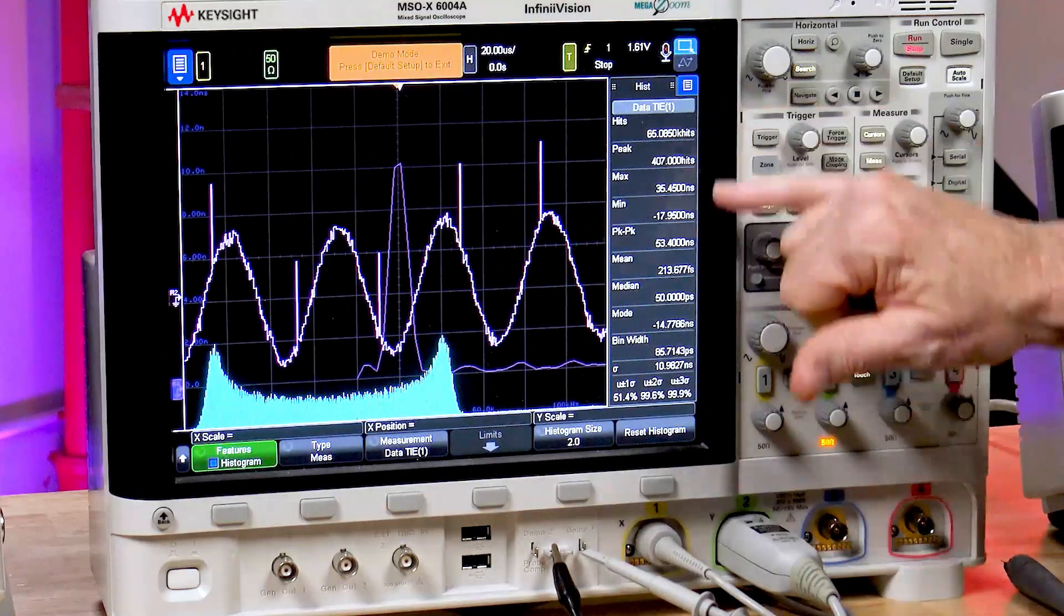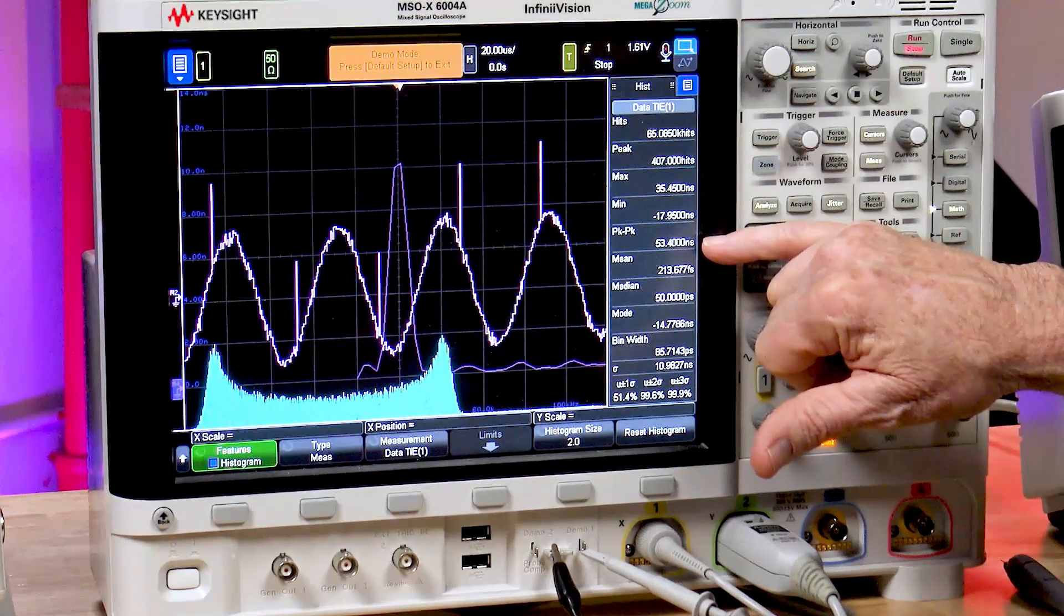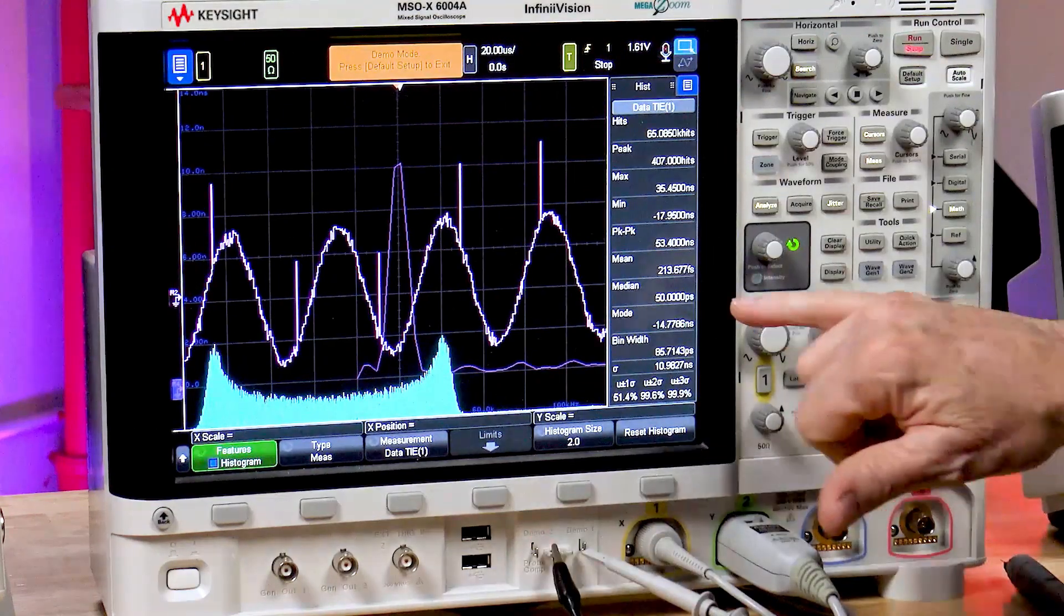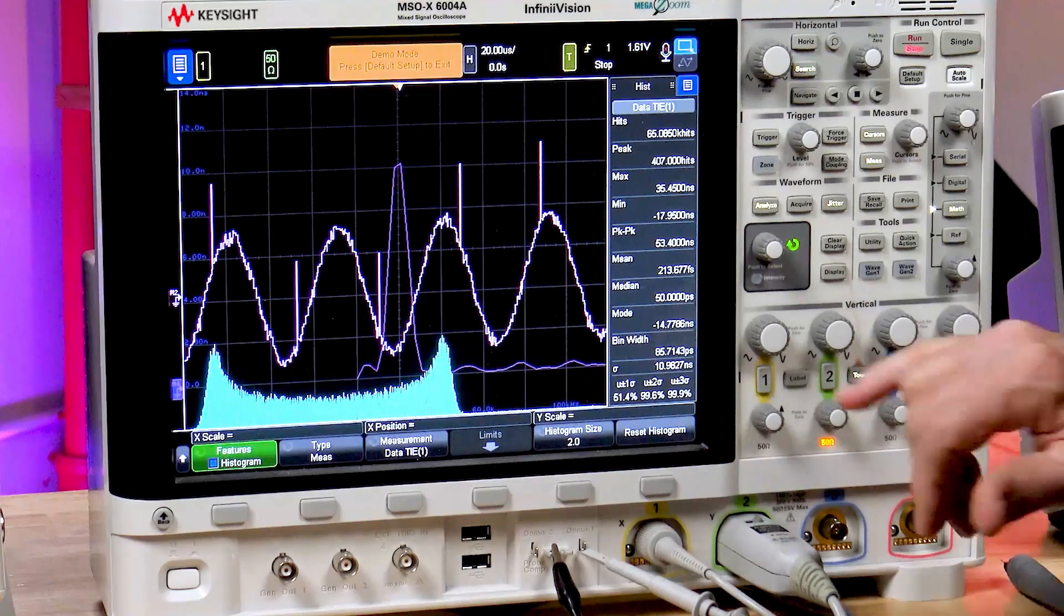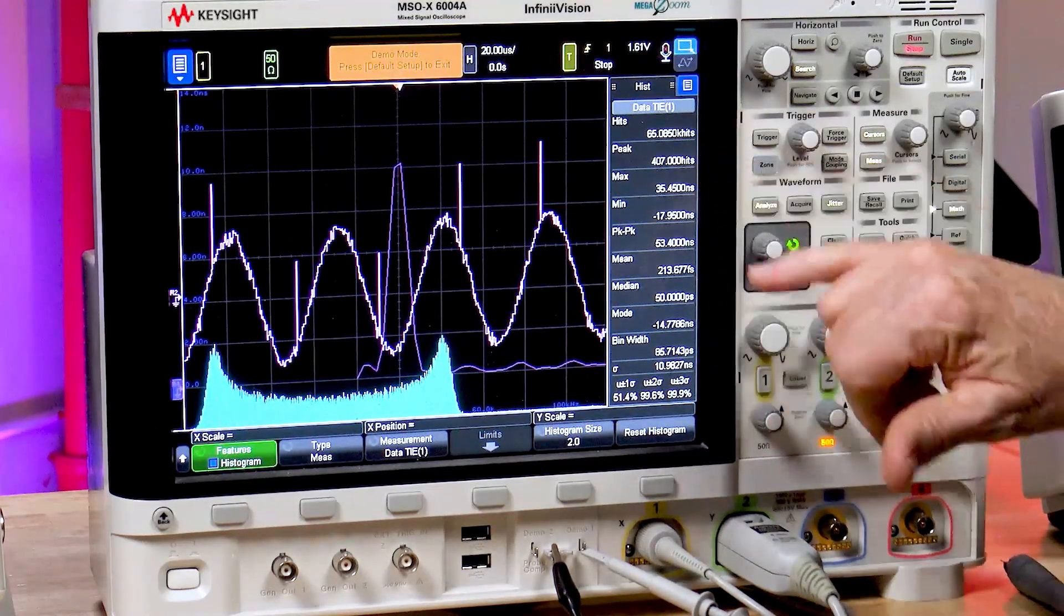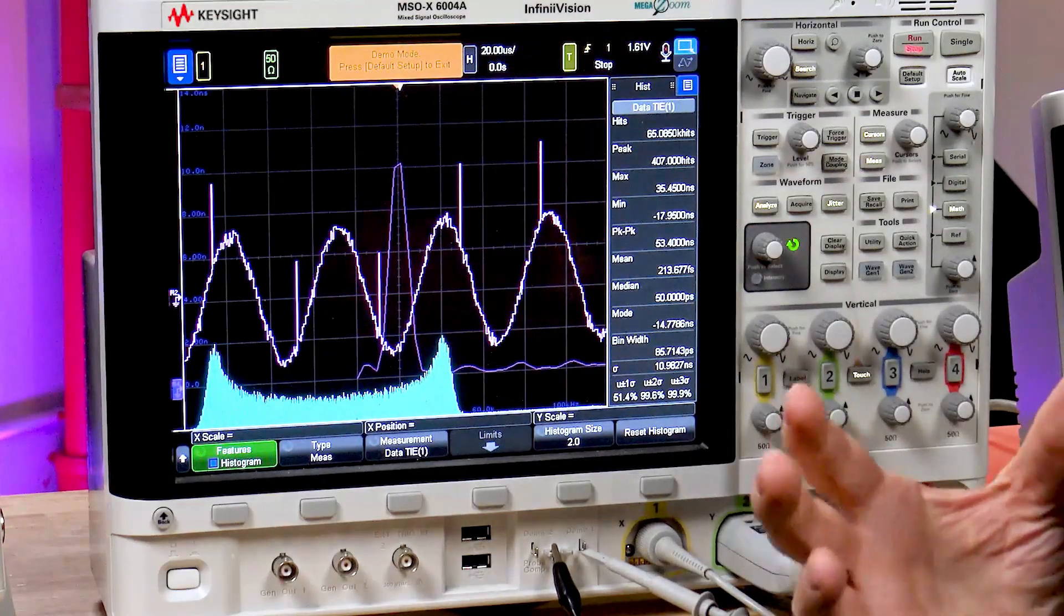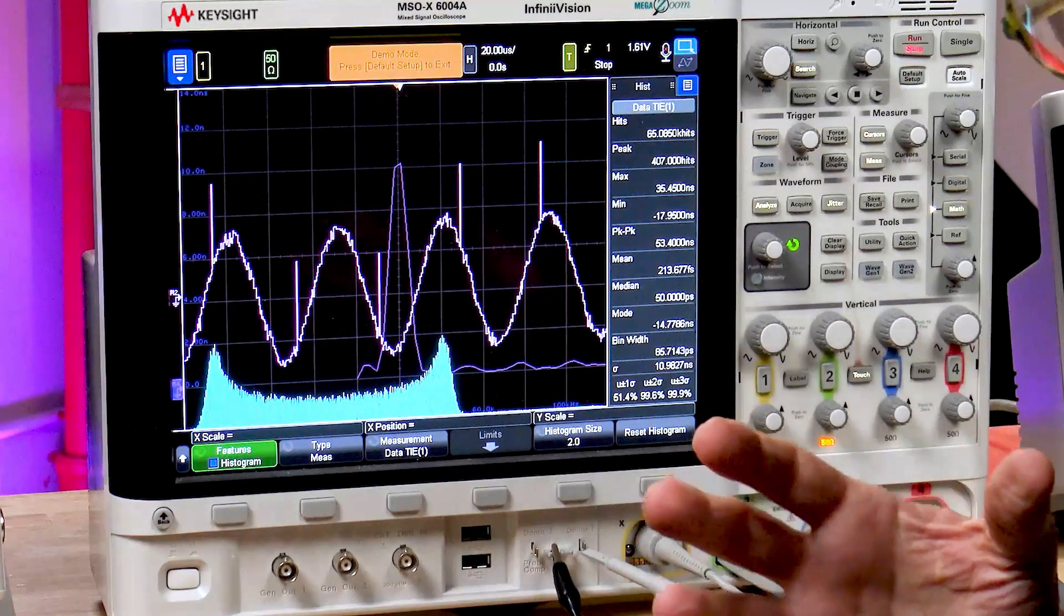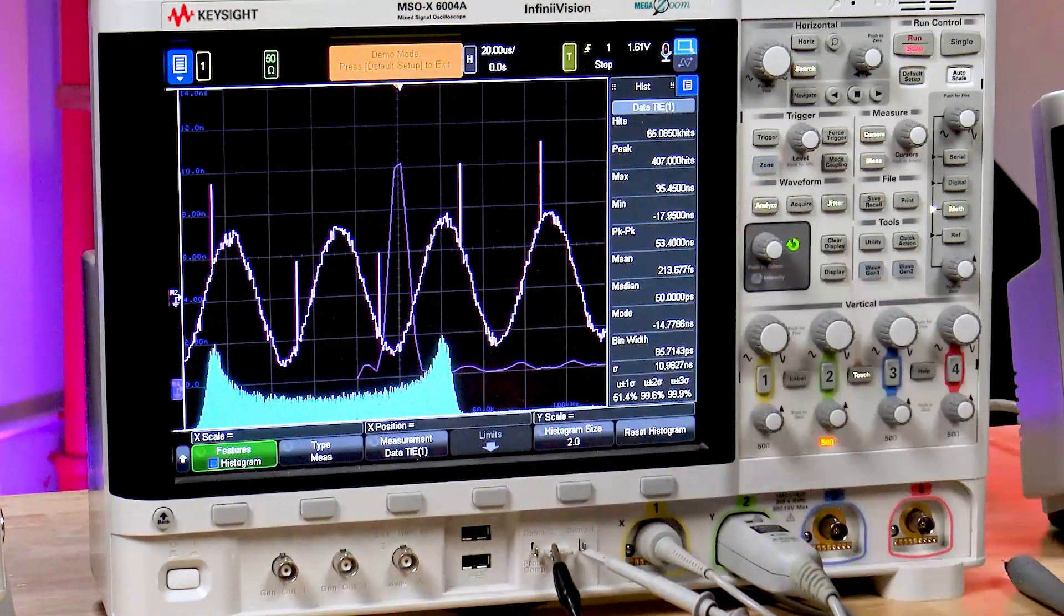And we have all sorts of statistical information. We have about 53 nanoseconds of peak to peak jitter. We have a standard deviation of about 10.9 nanoseconds. We have a max reading, a min reading. And so you can get various specific analytical information about the jitter. And you get various views.